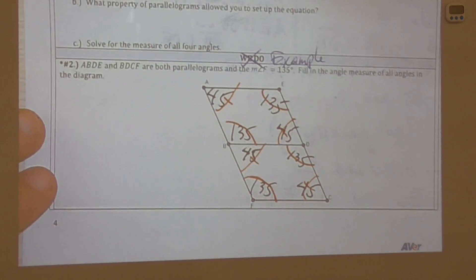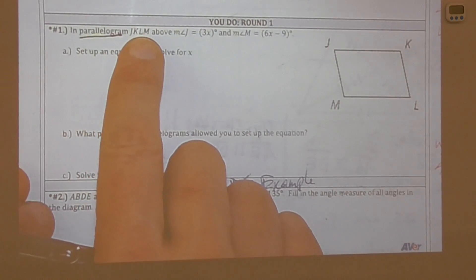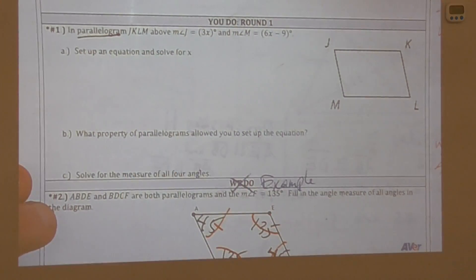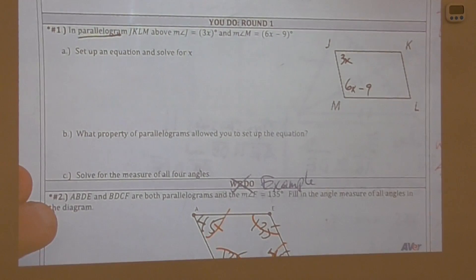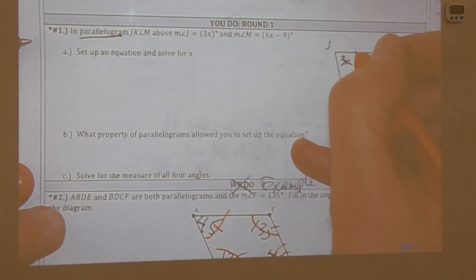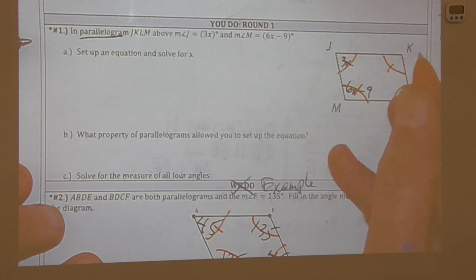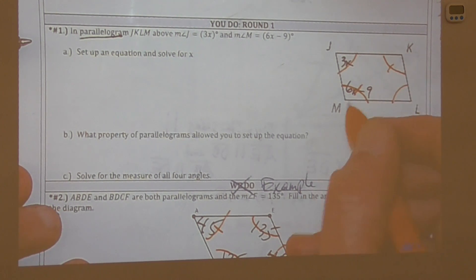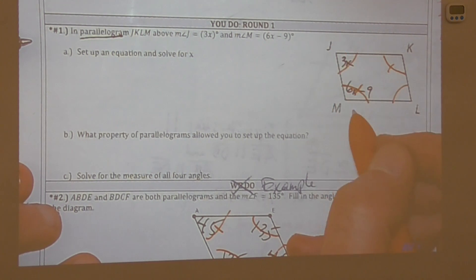Now a practice example. In parallelogram JKLM, angle J is 3x and angle M is 6x minus 9. Annotating the angles: angle L is congruent to angle J, and angle K is congruent to angle M, since opposite angles are congruent. But our equation won't use opposite angles — instead we use the adjacent angle relationship.